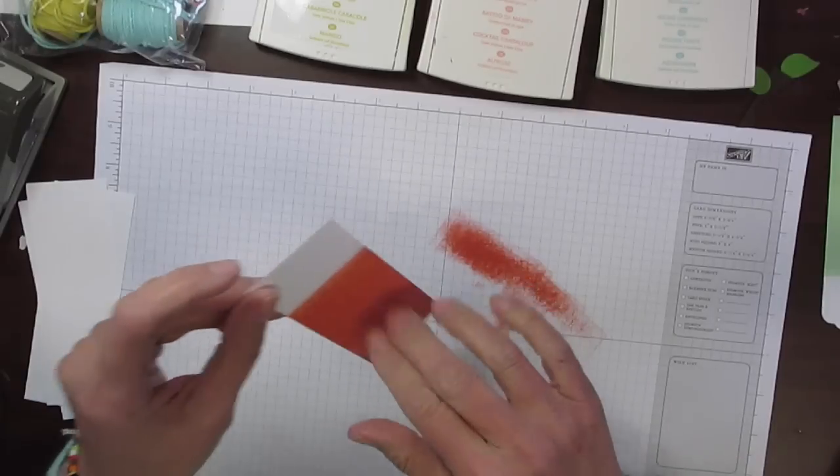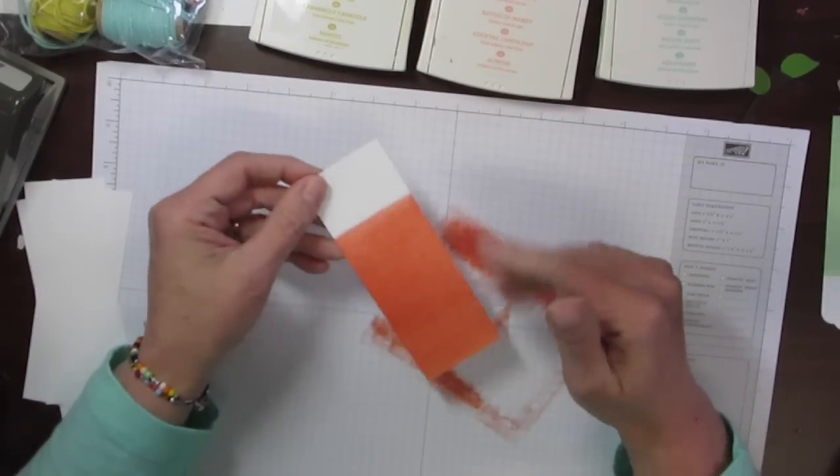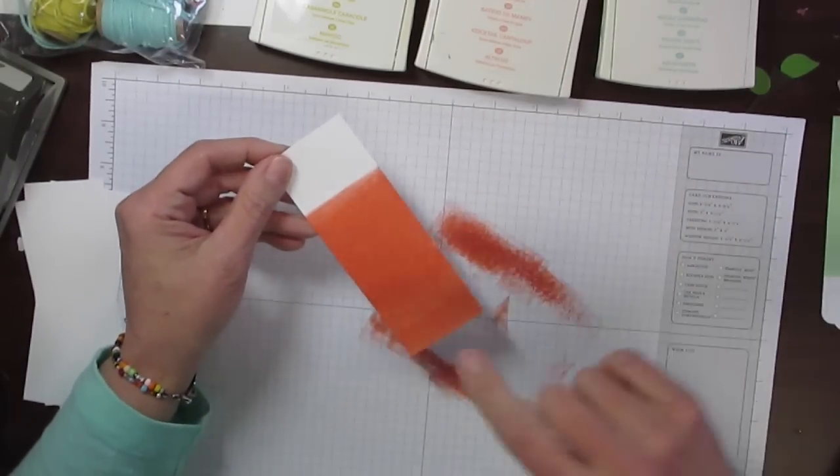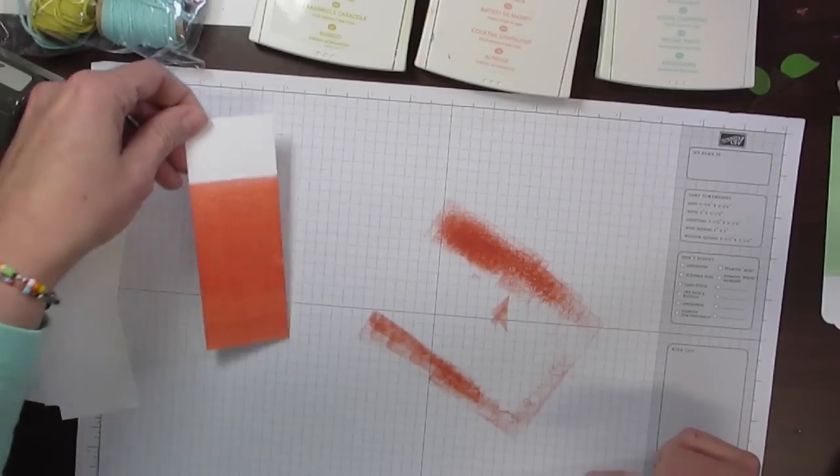The Dip Dye is that people do it with their hair and they dip it into dye and it goes up so far but not as much. So that's what this is, and I'm just going to set this piece of cardstock aside to dry.